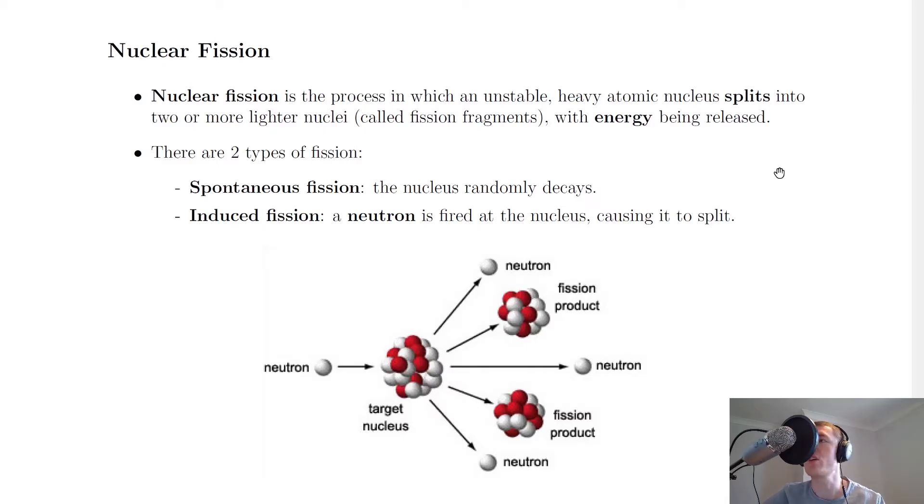So the two types of fission are called spontaneous fission and induced fission. If something's spontaneous, it doesn't follow a pattern, it's a bit random. So spontaneous fission is when the nucleus will randomly decay.